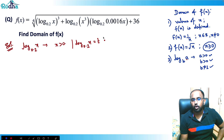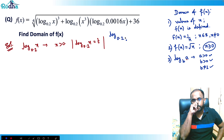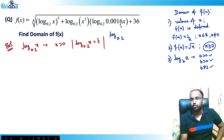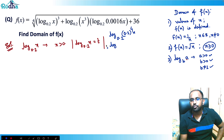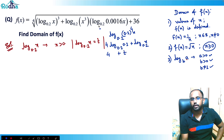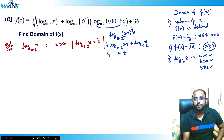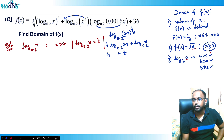We have log base 0.2 of 0.0016. Since 0.2⁴ = 0.0016, this equals 4. So log(0.0016, base 0.2) = 4. This means that term can be written as 4·log(0.2, base 0.2) + log(x, base 0.2), which simplifies to 4 + t. Similarly, the coefficient 3 comes in, giving us the expression to work with under the square root.